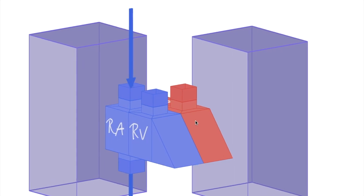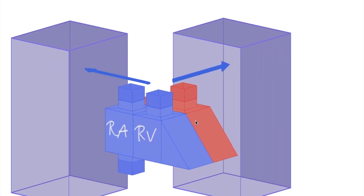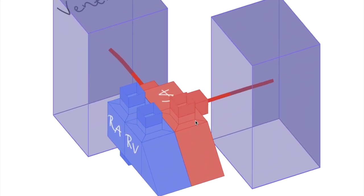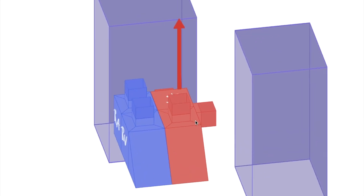From the body to the right atrium. From the right ventricle to the lungs. From the lungs to the left atrium. From the left ventricle to the body.